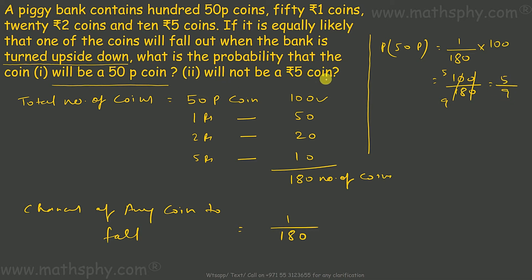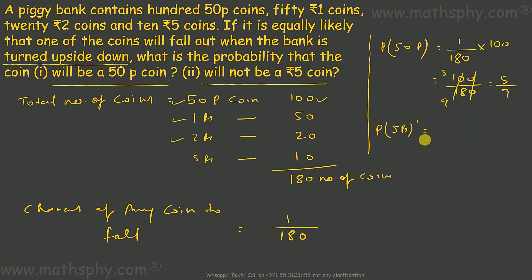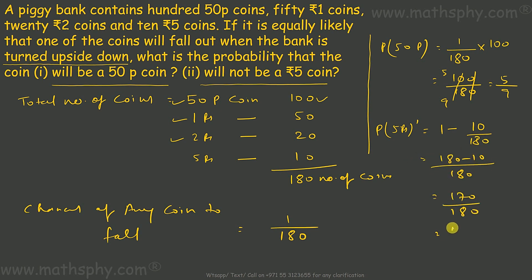For the probability that the coin will not be a 5-rupee coin: it can be a 50-paisa, 1-rupee, or 2-rupee coin — anything except a 5-rupee coin. So I calculate 1 minus the probability of a 5-rupee coin, which is 1 minus 10 over 180. This comes out to 17 over 18.